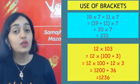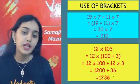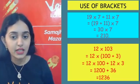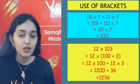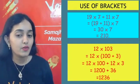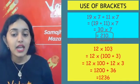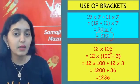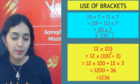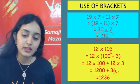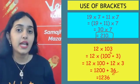Next, we learned about the use of brackets to make calculations easier. Suppose you have 19 × 7 + 11 × 7. You notice 7 appears twice, so take it as common: 7 × (19 + 11) = 7 × 30 = 210. Similarly, to multiply 12 × 103, break 103 as 100 + 3: 12 × 100 = 1200, and 12 × 3 = 36, then add to get 1236. Multiplication with 100 is always easier, so we use brackets where we want to simplify calculations.